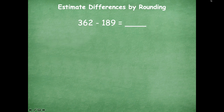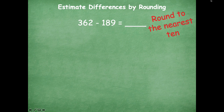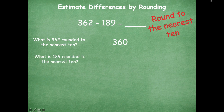But first I want us to look at rounding to the nearest ten. So same problem — we're rounding to the nearest ten. What is 362 rounded to the nearest ten? 360. What's 189 rounded to the nearest ten? 190.